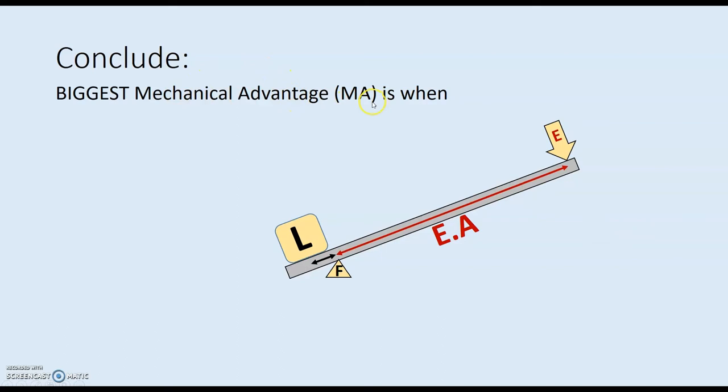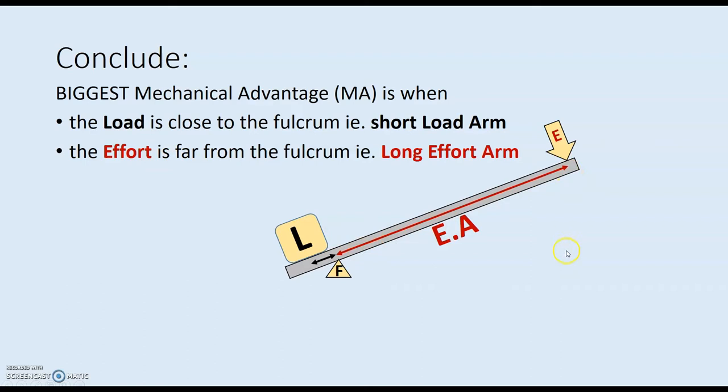So we can conclude that the biggest mechanical advantage is when the load is close to the fulcrum, short load arm, and the effort is as far from the fulcrum as you can get. But what we gain on force, we lose on distance. So we can lift a heavy load with a small effort, but you have to push it down a long distance in order to lift this only a short distance.